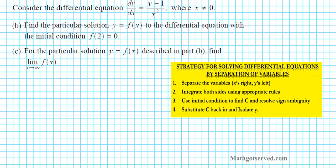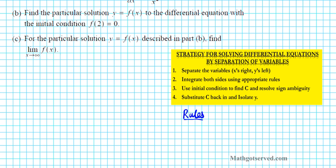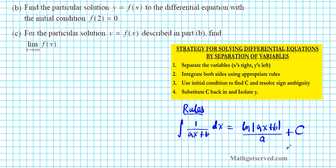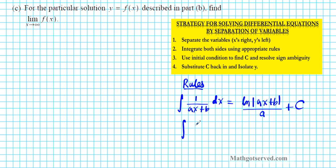There are some rules that we'll be using to solve this problem, so let's go over those real quick. The first one is the rule for integrating rational expressions: the integral of 1 over AX plus B dx, applying u-substitution, gives the natural logarithm of the absolute value of AX plus B divided by A, plus C. Also do not forget the power rule for integrals: the integral of X to the N dx equals X to the N plus 1 over N plus 1, plus C.